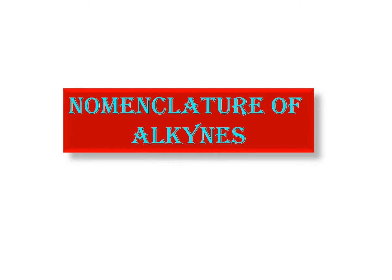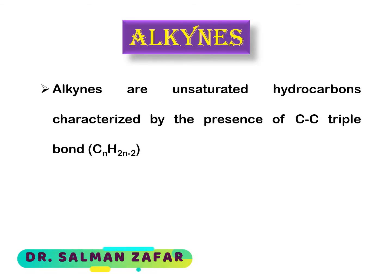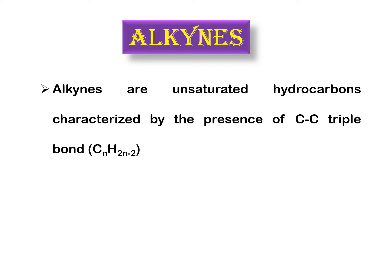In this video lecture we will talk about the nomenclature of alkynes according to the IUPAC system. Alkynes are unsaturated hydrocarbons characterized by the presence of a carbon-carbon triple bond in their structure. The general formula for alkynes is CnH2n-2, so anywhere you see a carbon-carbon triple bond in a molecule, you can call that molecule an alkyne if this is the parent functional group.